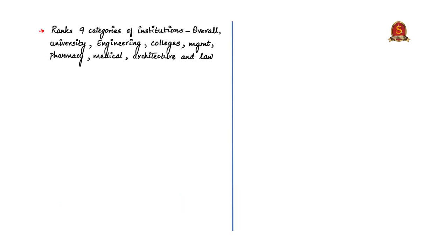The number of categories of institutions which are ranked are nine. They include: overall category, universities, engineering, colleges, management, pharmacy, medical, architecture, and law. Out of these, the last three — medical, architecture, and law — were introduced in 2018.